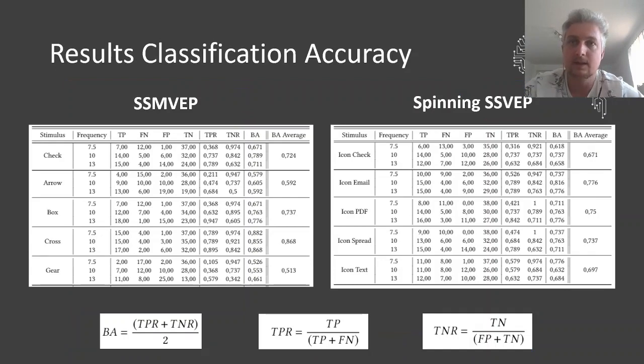Coming to the results. I have to clarify that we did not really use the classification accuracy, but rather the balanced accuracy for our results, because the amount of classifications for the positive condition and the negative condition is uneven with a prevalence of one-third due to three different target frequencies.